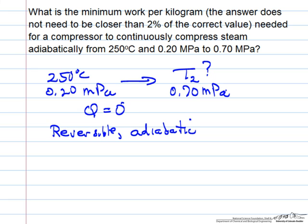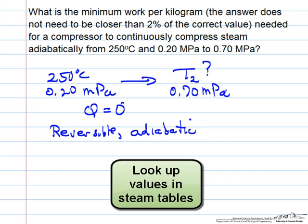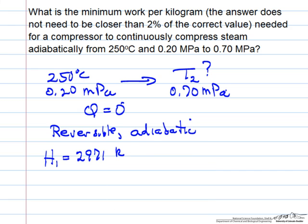We can use the steam tables to look up our initial conditions: H1 = 2971 kilojoules per kilogram, and likewise the initial entropy S1 = 7.710 kilojoules per kilogram Kelvin.